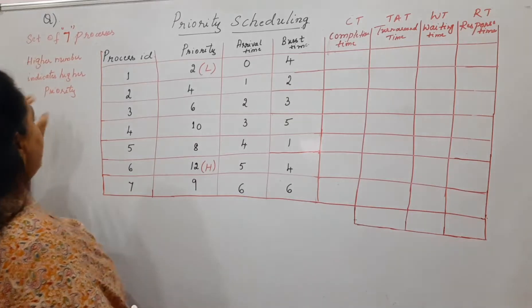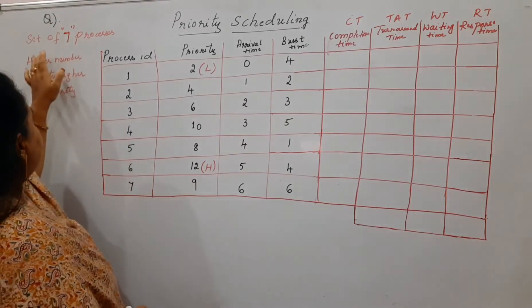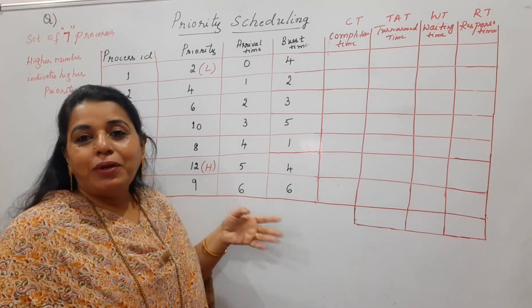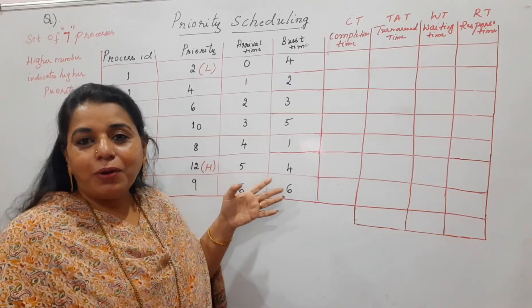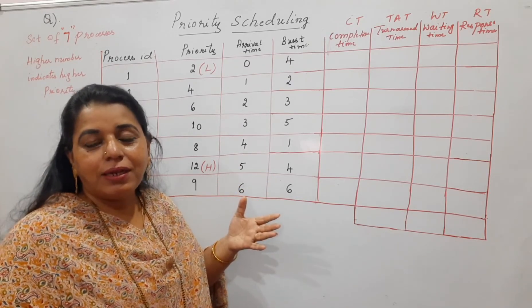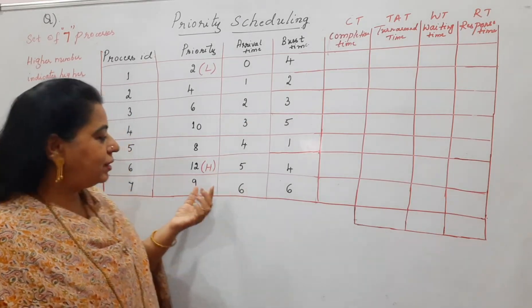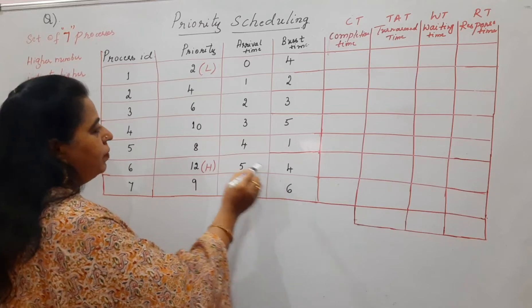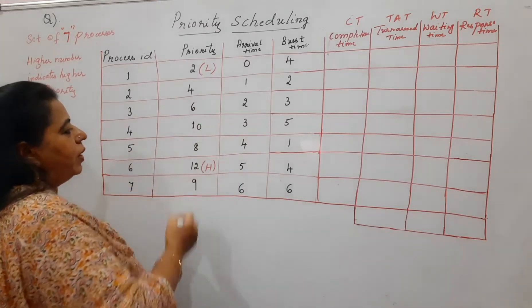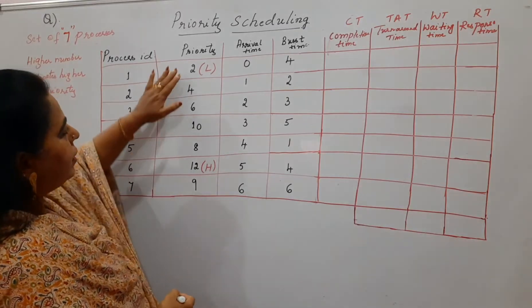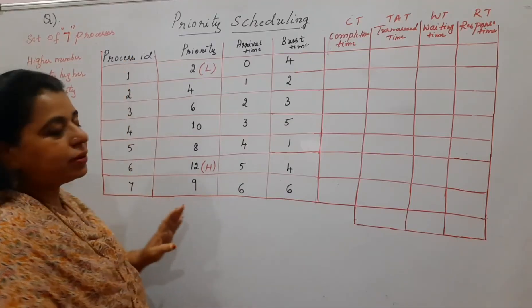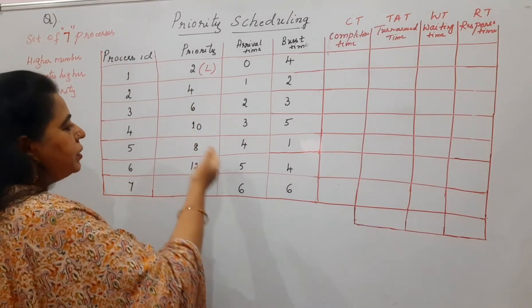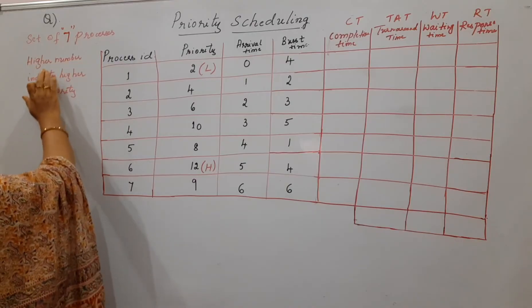Let us see a numerical on priority scheduling. We consider a set of seven processes — based on student requests, I've increased the number from four. The question gives the process ID, arrival time, burst time, and a priority column. In this example, a higher number indicates higher priority — so priority 12 is the highest.